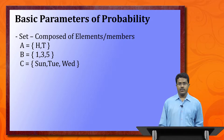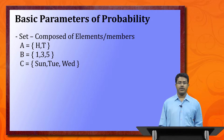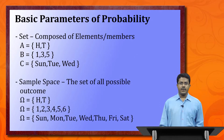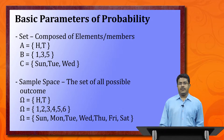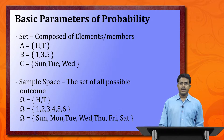Sample space is the set of all possible outcomes. For tossing a coin it is {head, tail}; for rolling a die it is {1, 2, 3, 4, 5, 6}. The sample space has two very essential properties: events must be mutually exclusive and collectively exhaustive.